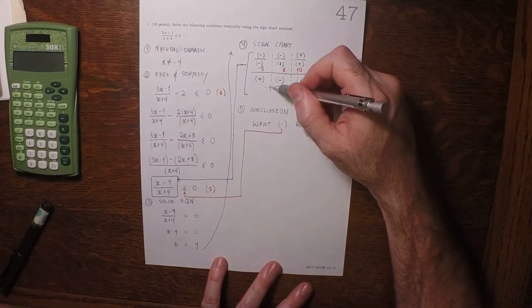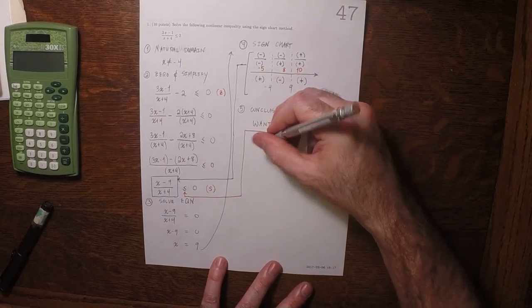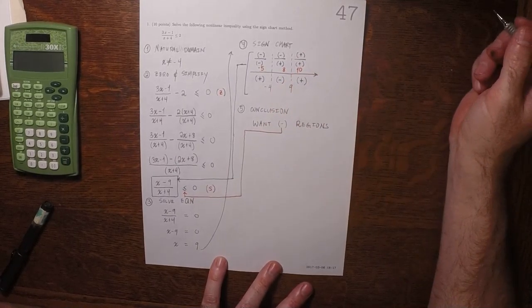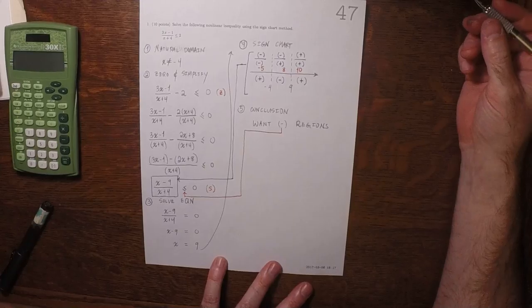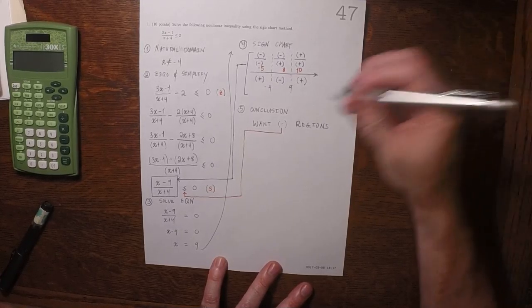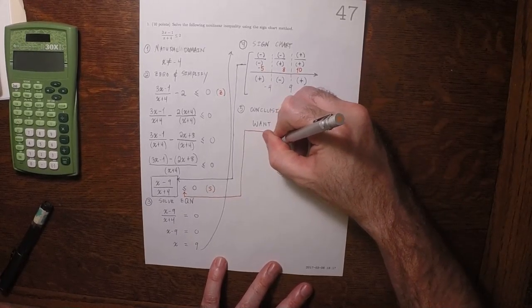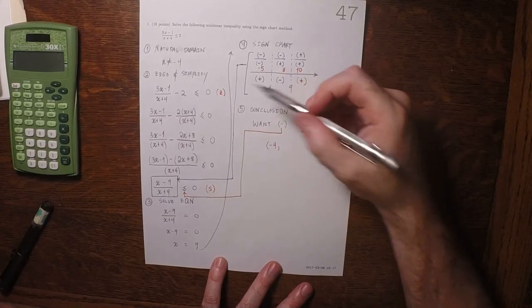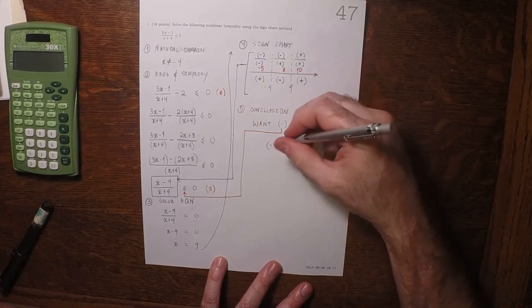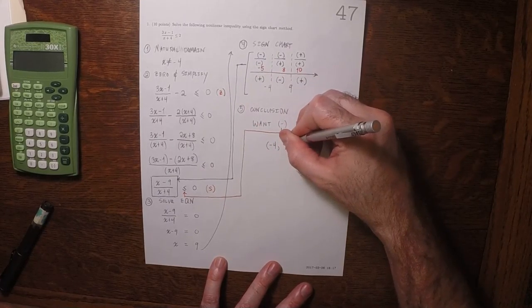The region from negative 4 to positive 9 is the answer we're looking for. It's not including negative 4 because it's not in the natural domain, but it includes up to and including 9.